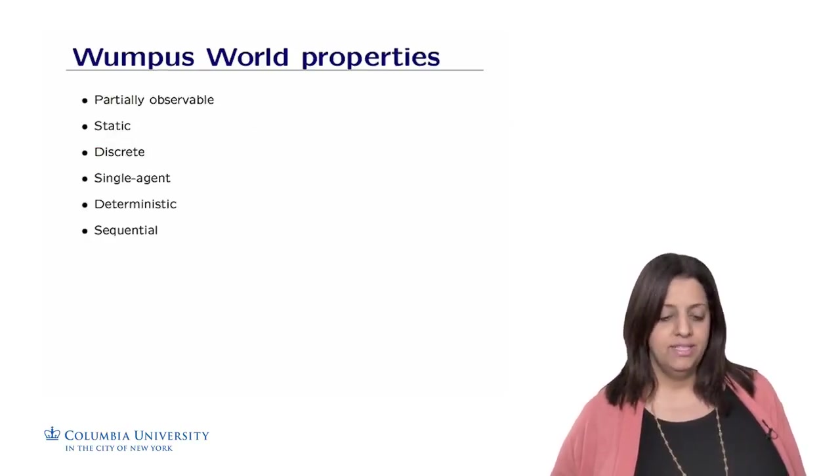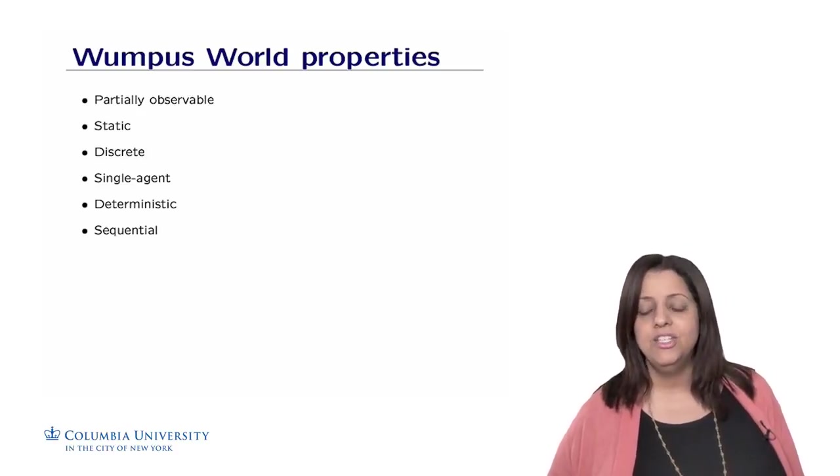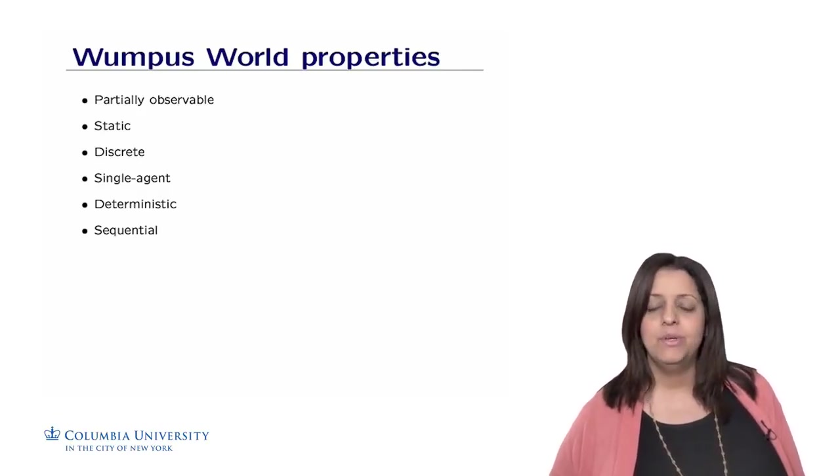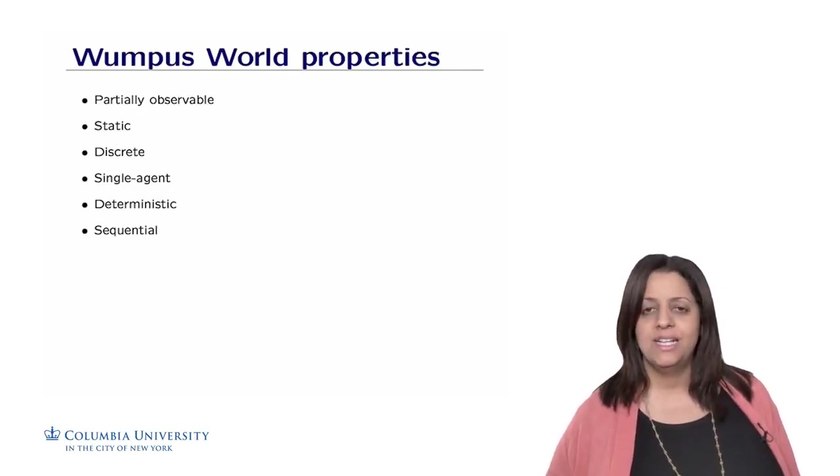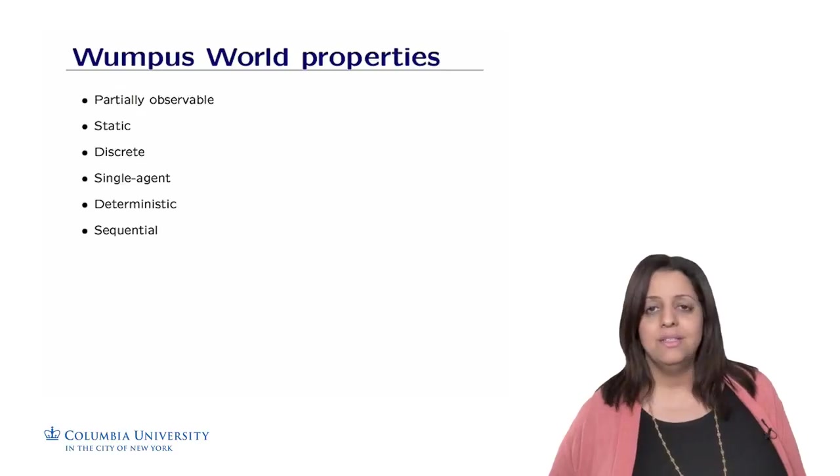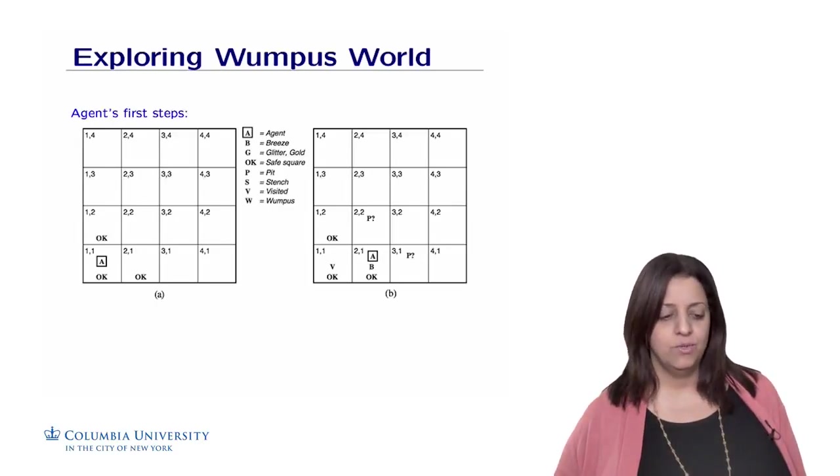The Wumpus world properties are as follows. It's partially observable because the agent can only perceive its close environment like the adjacent rooms. It's static because the Wumpus and the pits are not moving. It's discrete. We know exactly the actions and the outcomes. It's single agent, deterministic, and finally, it's sequential.